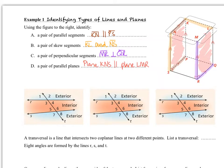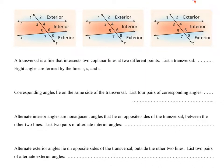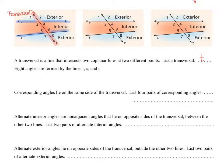The next section has three identical images where we figure out some new definitions. We have two lines that are not parallel, and then another line going through them at an angle. This line going through the other two lines is called a transversal — a line that intersects two coplanar lines at two different points. We identify line T as a transversal. Eight different angles are formed by the three lines R, S, and T, and they are numbered one through eight in our image.